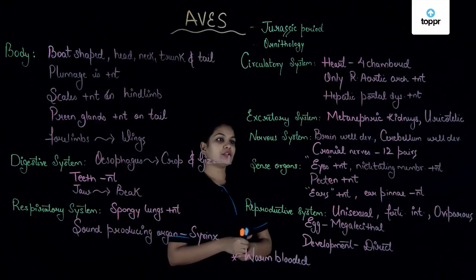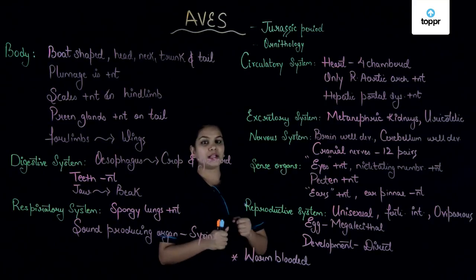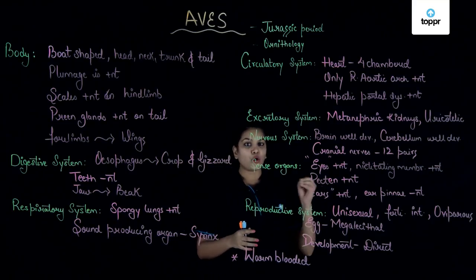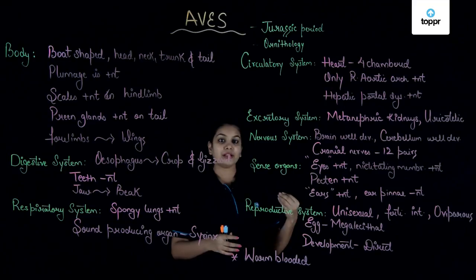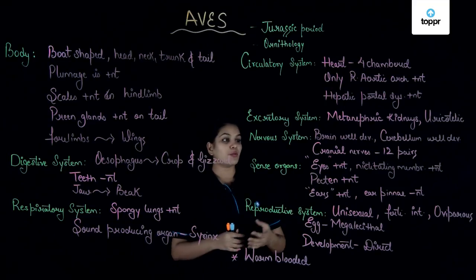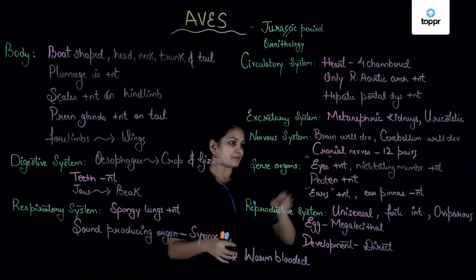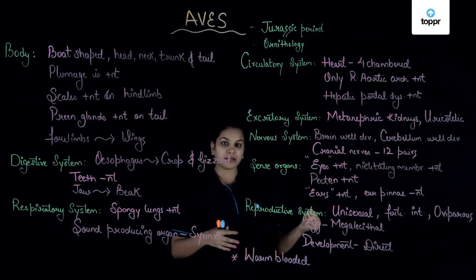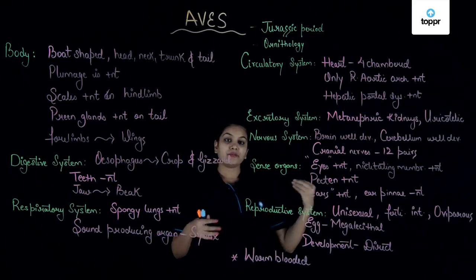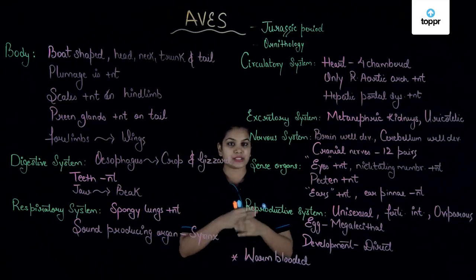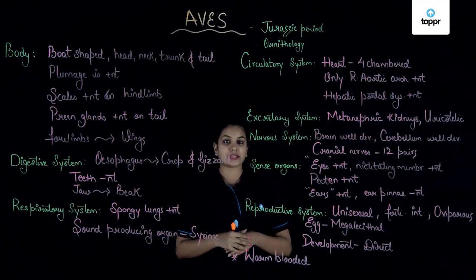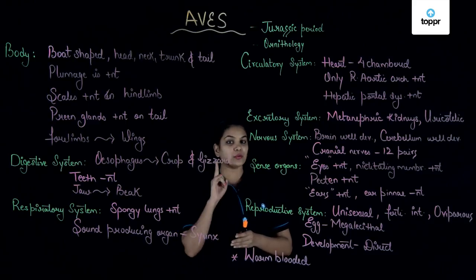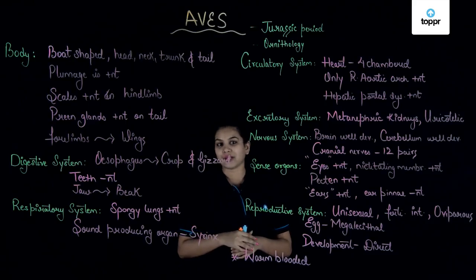Coming to the nervous system, the brain is large and well-developed. The cerebellum is also well-developed in birds. The cranial nerves are found to be 12 pairs, and the skull is considered to be monocondylic as there is only one occipital condyle present.